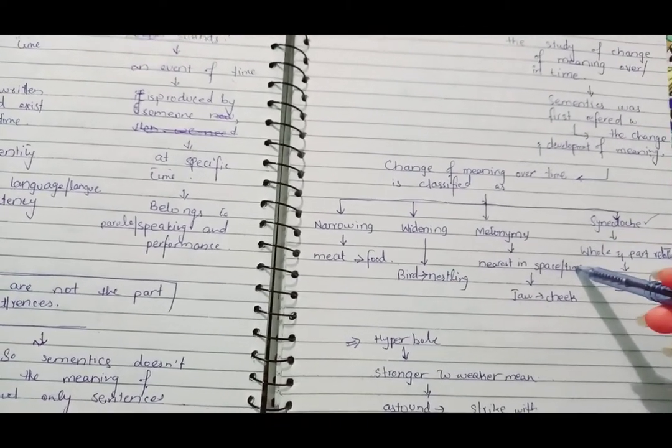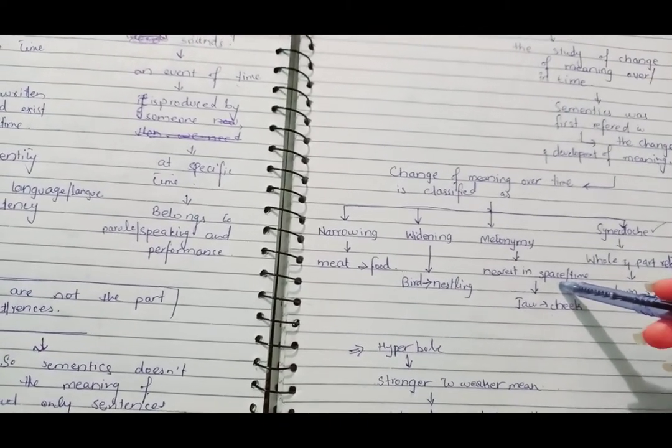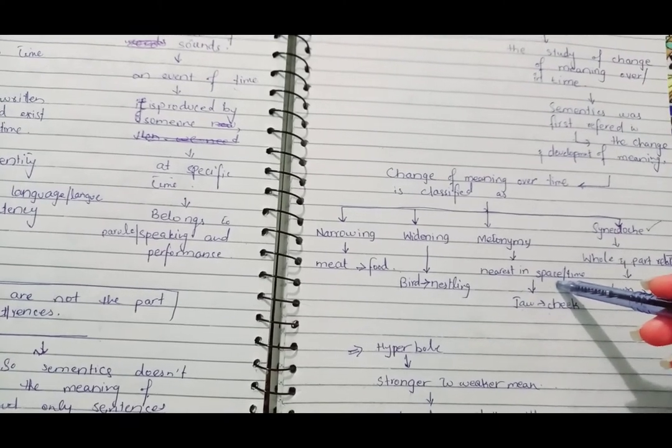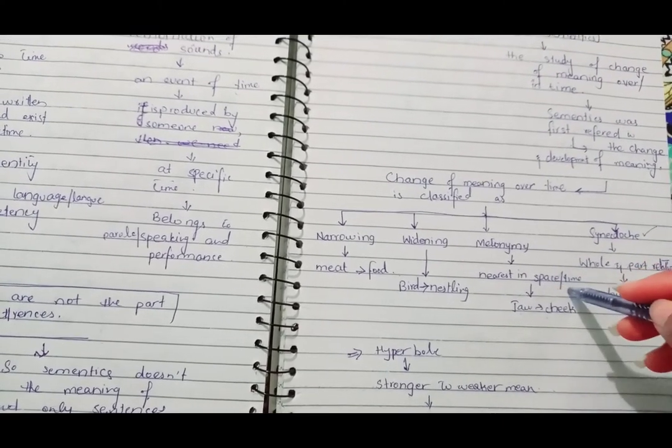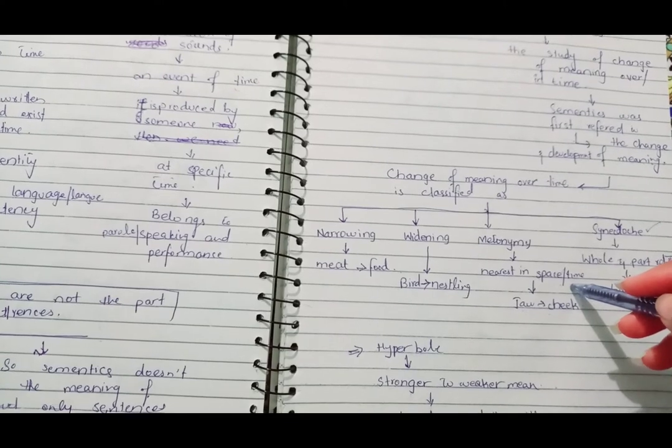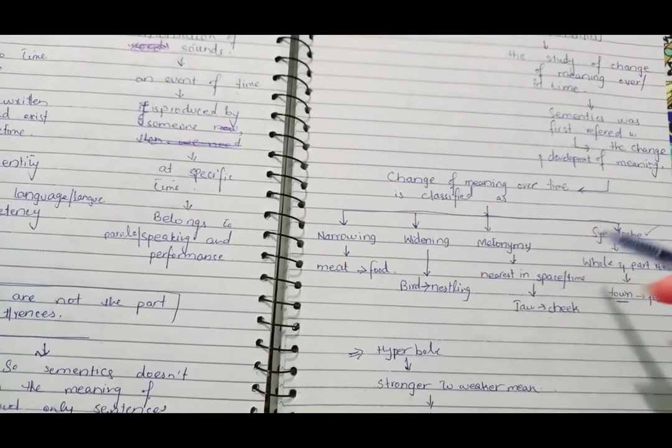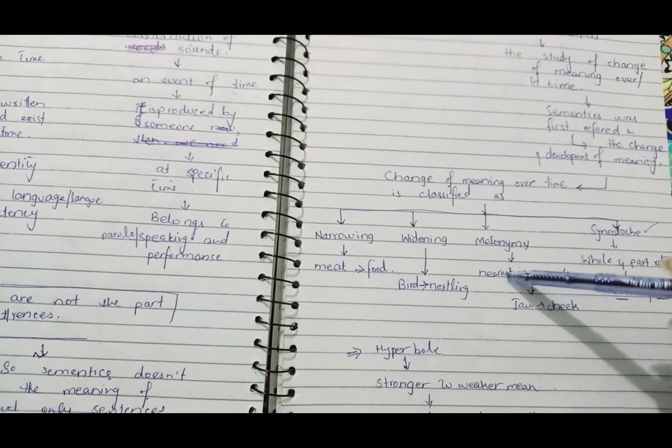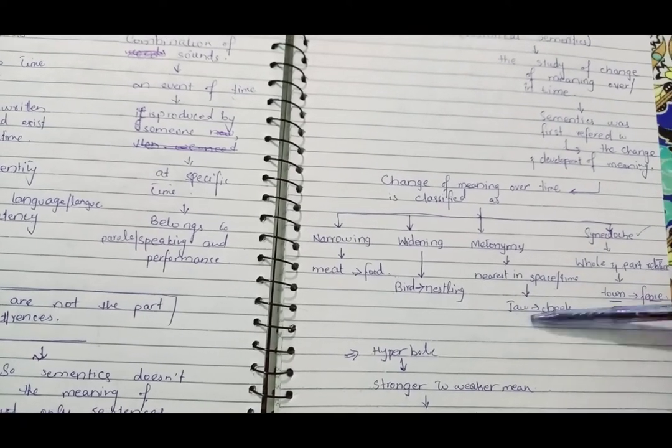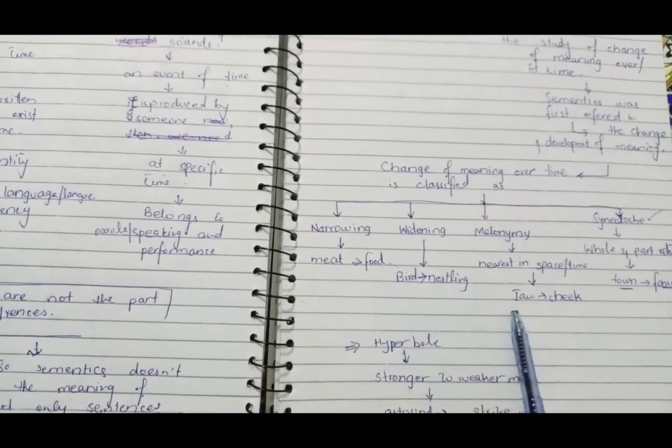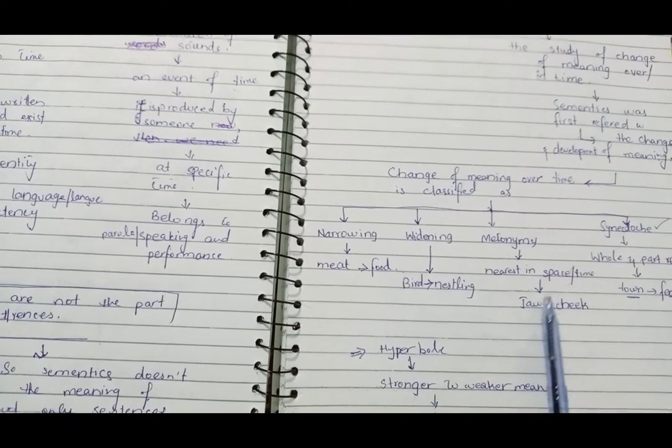Metonymy: nearest in space and time. Metonymy relationship we have in chapter number nine, George Yule's book. Metonymy is the relationship, and we have read three types of relationships. Here we have just one type of relationship to deal with, that is nearest in space and time.